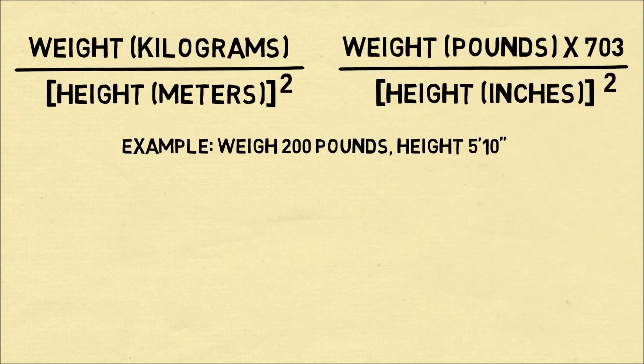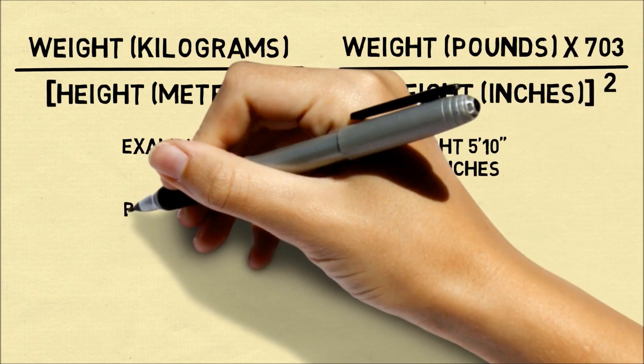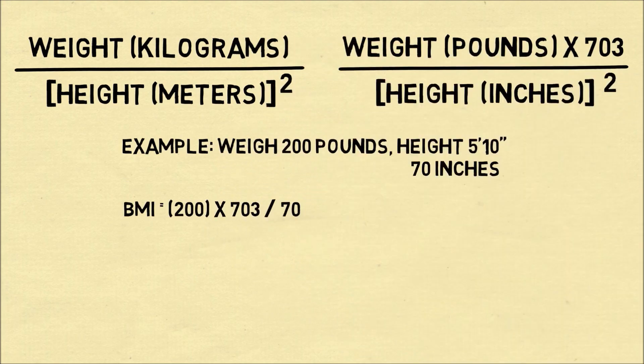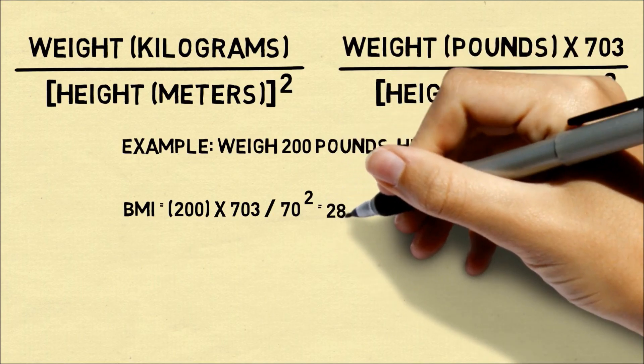So let's do an example of someone who weighs 200 pounds and has a height of 5 feet 10 inches. We convert that to 70 inches and the BMI will be 200 times 703 divided by 70 squared. This is 28.7.